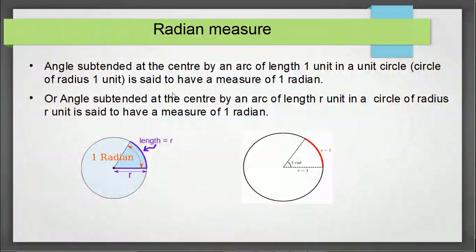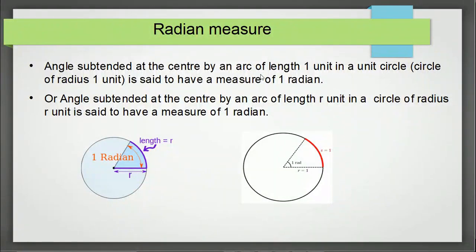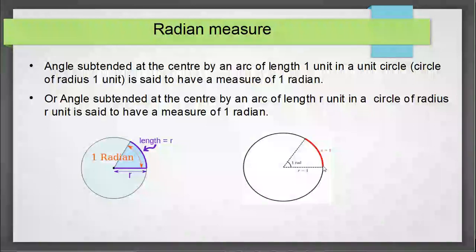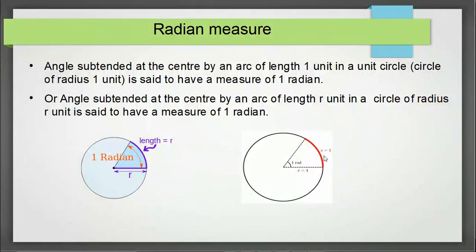Now I repeat the definition of radian measure: it is the angle subtended at the center by an arc of length 1 unit. That means you take a length of arc equal to 1 unit. In the right-side figure, the red strip shows the length of arc of the unit circle — the radius is 1 unit and the length of arc is also 1 unit. This arc subtends a certain angle at the center, and this quantity of angle is defined as 1 radian.